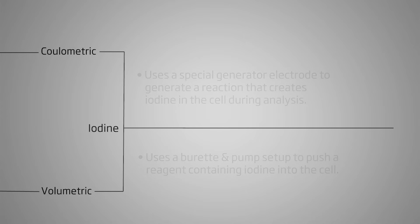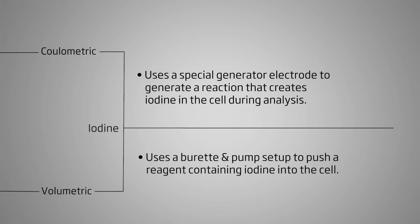Coulometric titrators have a special generator electrode that drives an electrolytic reaction that creates iodine directly in the cell. Volumetric titrators have a pump that adds the reagent containing iodine directly to the titration cell. This difference is very important since the coulometric titrator can accurately generate small quantities of iodine by applying small amounts of charge, while the volumetric is more suitable for samples with higher amounts of water.